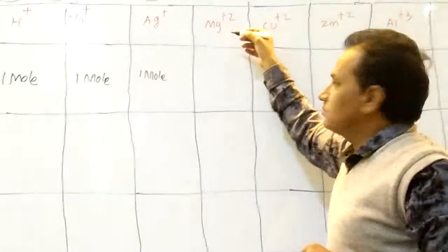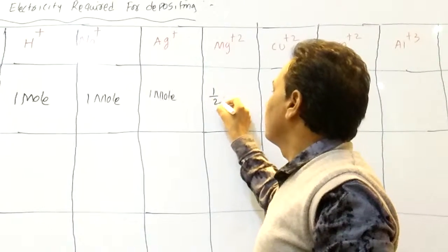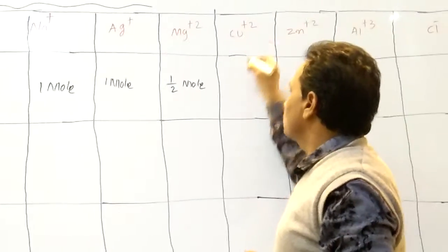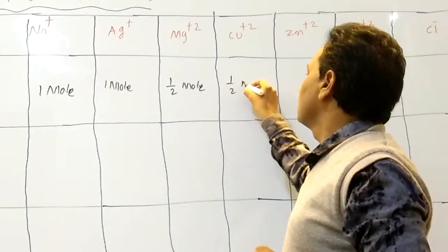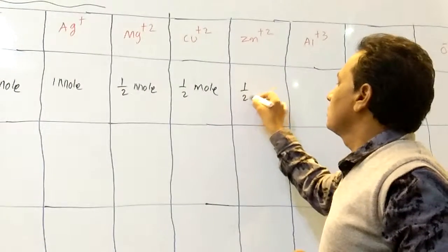Here, positive plus two charges, that's why half mole, one by two mole. Here also, plus two means one by two mole. Here, plus two means here also one by two mole.